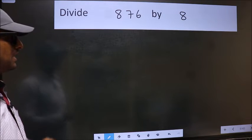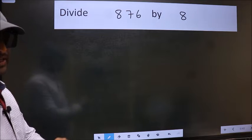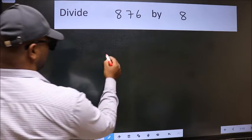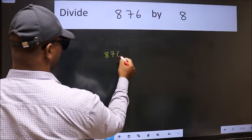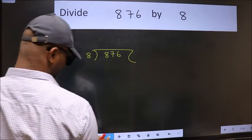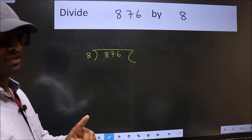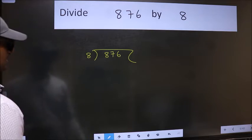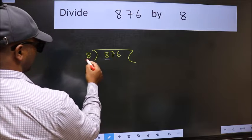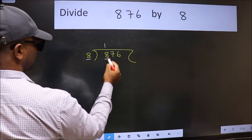Divide 876 by 8. To do this division, we should frame it in this way: 876 here and 8 here. This is your step one. Next, here we have 8 and here 8. When do we get 8 in 8 table? 8 once 8.